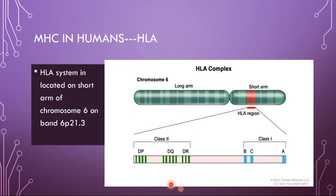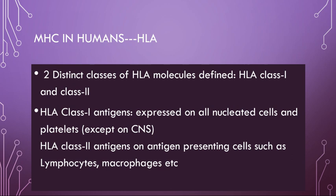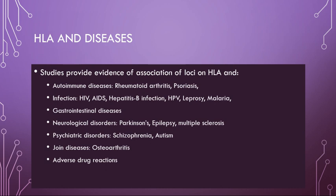The HLA complex has two distinct classes of molecules, similar to MHC. Class I HLA antigens are expressed on all nucleated cells and platelets, except for the central nervous system. Class II HLA antigens are expressed on antigen-presenting cells such as lymphocytes and macrophages. In terms of their expression and function, MHC and HLA are essentially parallel systems, and research has provided strong evidence for their roles in coordinating immune responses.